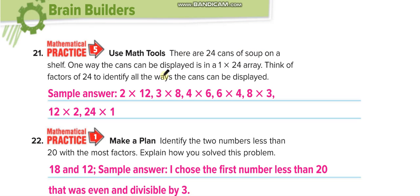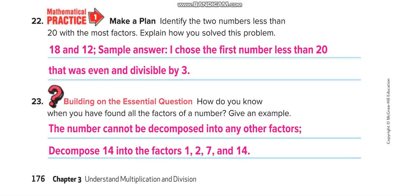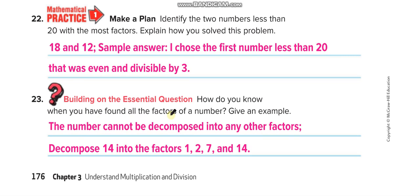There are 24 cans of soup on a shelf. The ways the cans can be displayed: 1×24, 2×12, and so on — finding the factors of 24. You know you have found all the factors when you cannot find any more two numbers that multiply to give that number. For 14, for example, only 1×14 and 2×7.